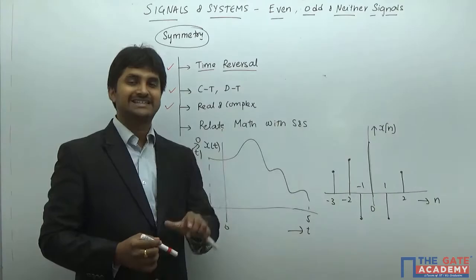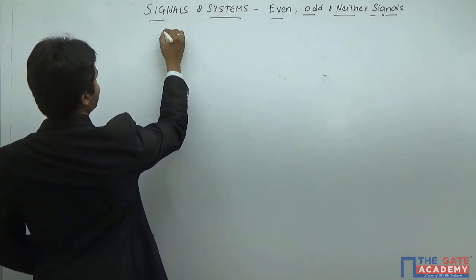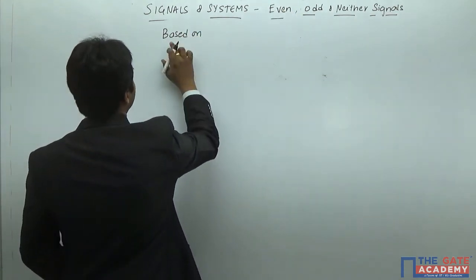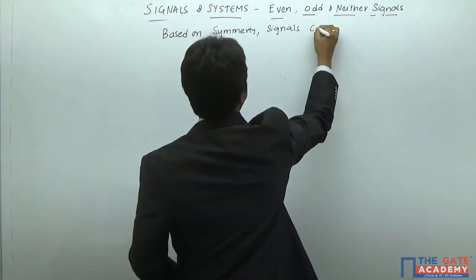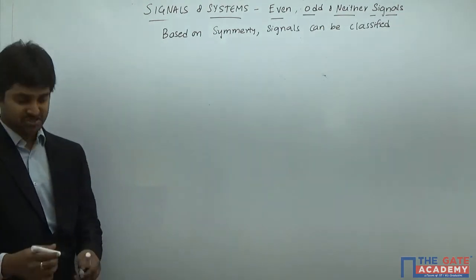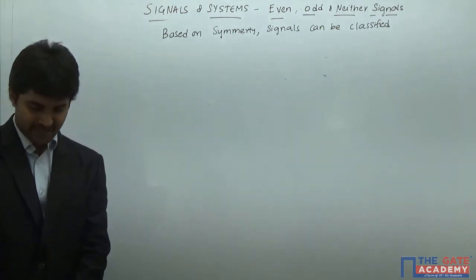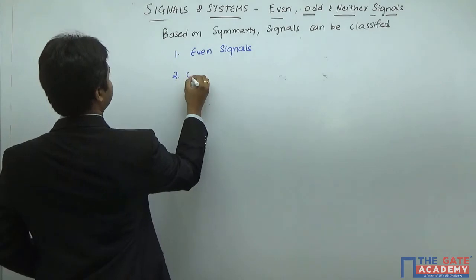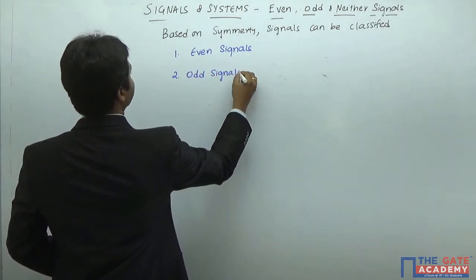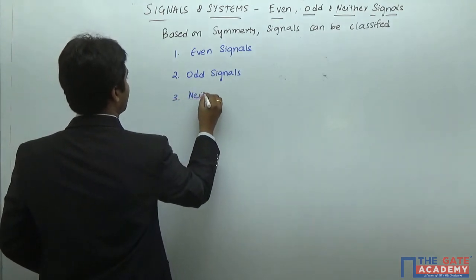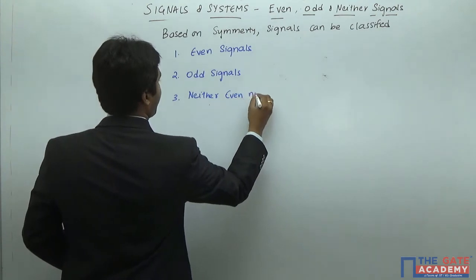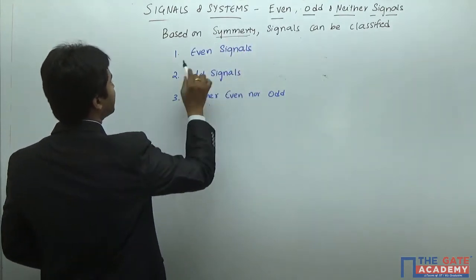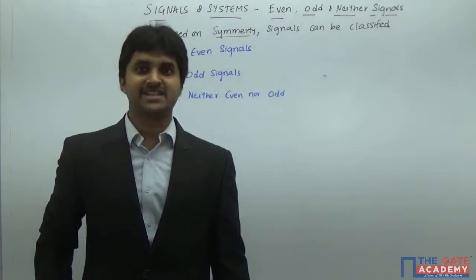Based on the property of symmetry, signals can be classified as: number one, even signals; number two, odd signals; and number three, neither even nor odd.